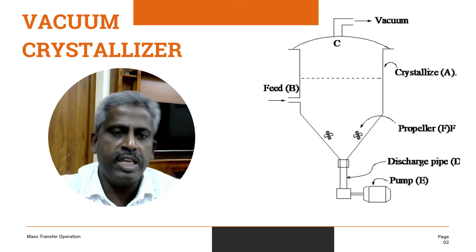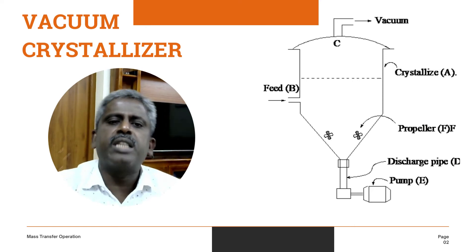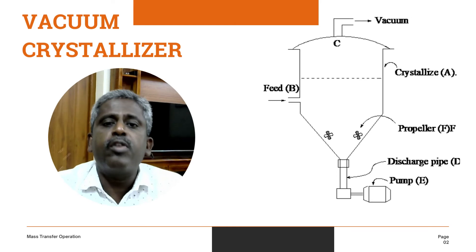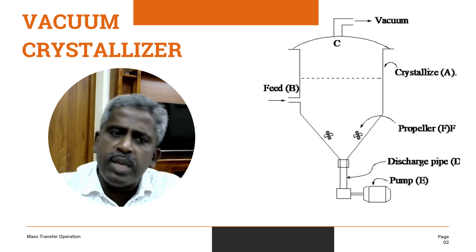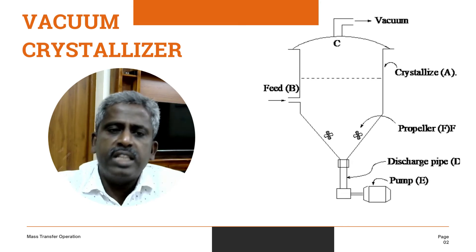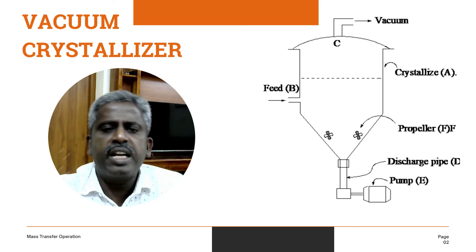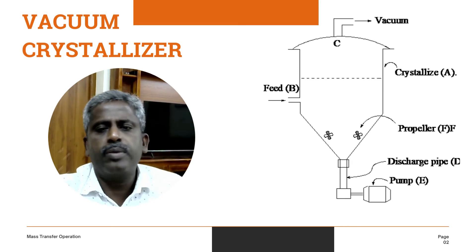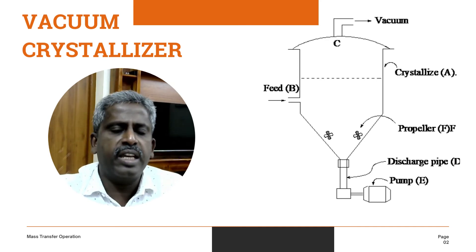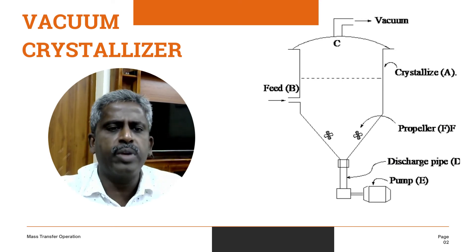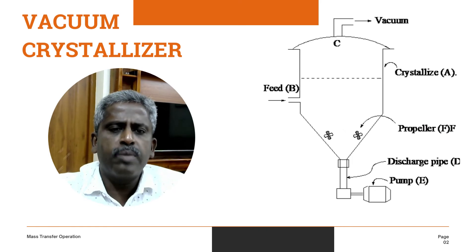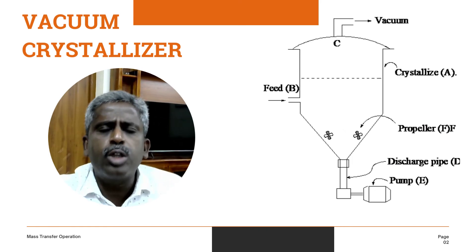There is sometimes a tendency for the feed to short-circuit to the discharge pipe without being flushed — that is, the feed enters and directly flows into the discharge pipe. For this reason, two propellers indicated as F are installed in the crystallizer to keep the solution thoroughly stirred and to prevent the feed solution from reaching the discharge pipe without flushing.